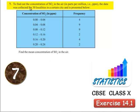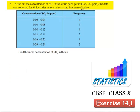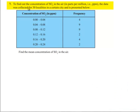Problem 7: To find out the concentration of SO2 in the air in parts per million (ppm), the data was collected for 30 localities in a certain city and is presented below. Concentration of SO2 in ppm is given as grouped data and frequency is given. Find the mean concentration of SO2 in the air. Moving with solution.